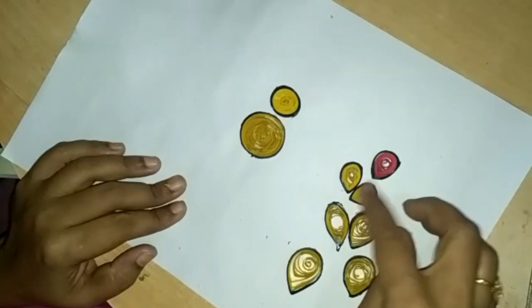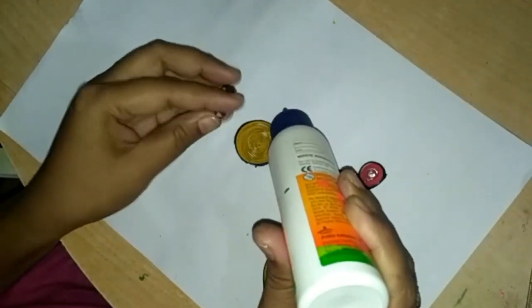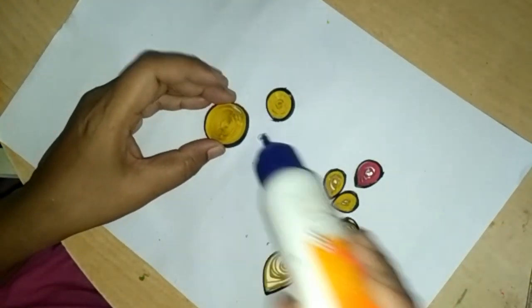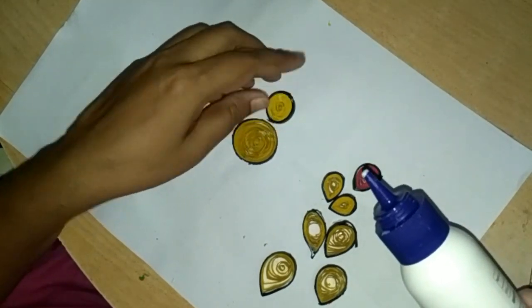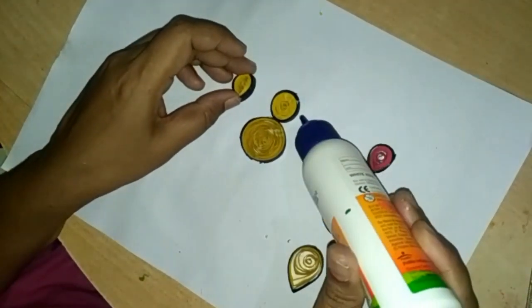Make one more petal shape. Apply fake oil and paste both circles. Now paste small petal shape like this.